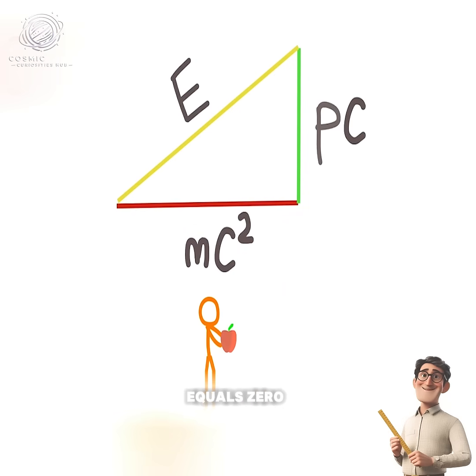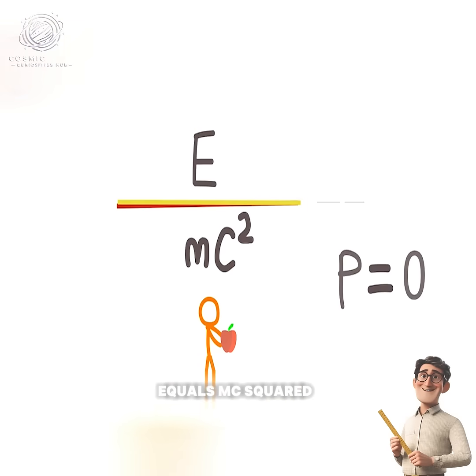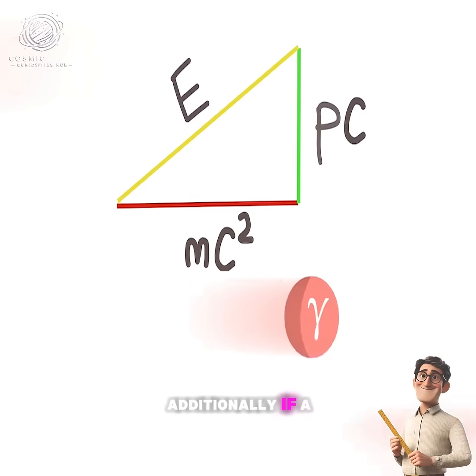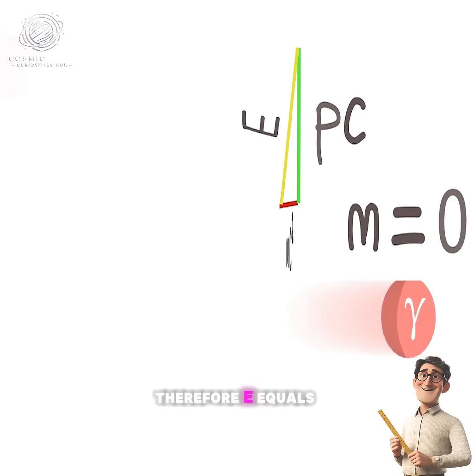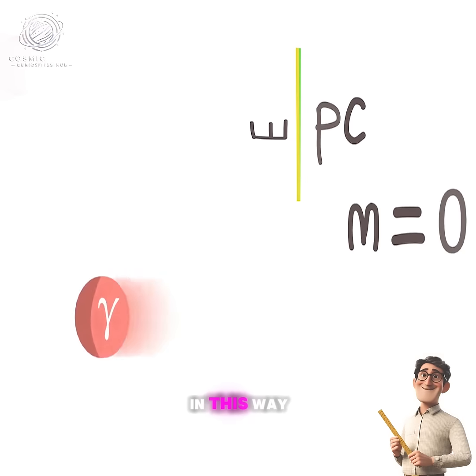It can be clearly seen from this diagram that if an object is at rest, its momentum equals zero. This means we return to E=mc². Additionally, if a particle has no mass like a photon, its mass equals zero, therefore E=pc.